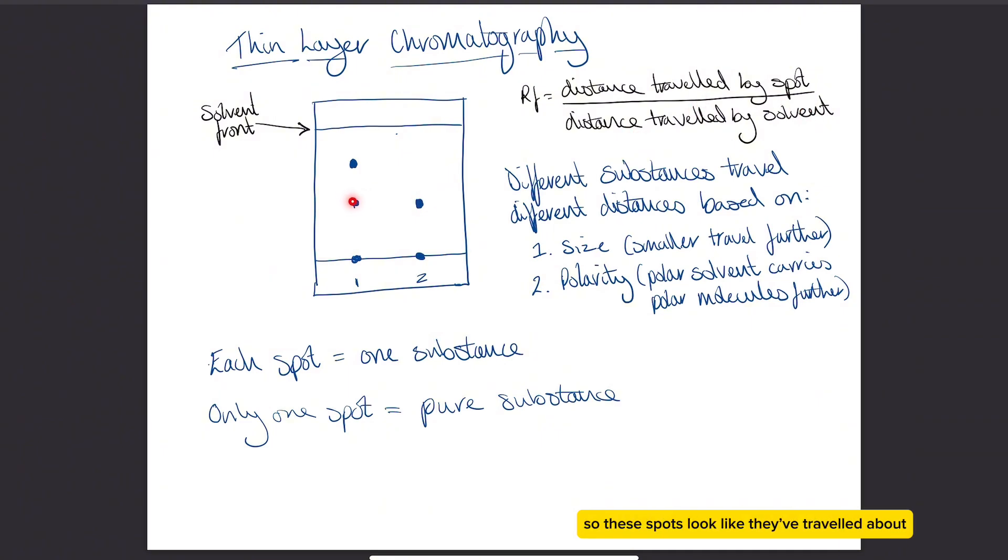So these spots look like they've traveled about just under halfway up with the solvent, so their RF value would maybe be roughly 0.45, but you would actually measure with a ruler and work it out accurately. Substances with the same RF values are the same substance. Because these two spots match up, they are the same substance, so you can see that sample one and sample two both have whatever this substance is within them.